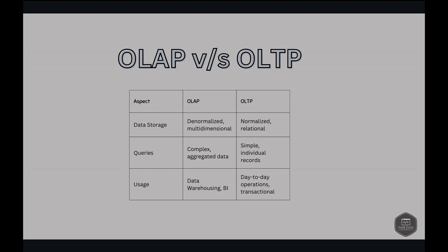In summary, OLAP and OLTP might sound similar but they serve different purposes. OLAP is like a deep dive into data, analyzing it from various angles, while OLTP is all about quick and efficient transaction processing. Understanding the difference between these two is crucial for choosing the right database solution for your needs. Remember: OLAP is for digging deep, while OLTP is for quick and reliable transactions.